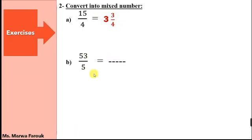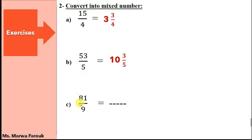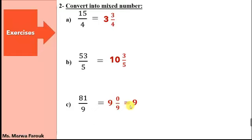Let's see another one: 53 divided by 5. When I divide 53 by 5, I'm going to get 10 and the remainder will be 3. 10 is the whole number and the 3 is the new numerator. So I'm going to have 10 and 3 fifths, and the denominator doesn't change. 81 divided by 9 equals 9 and I have no remainder. So the remainder here is 0, which means the whole number is 9 and the new numerator is 0. But 0 divided by 9 equals 0, so we got 9 plus 0, which is just 9.